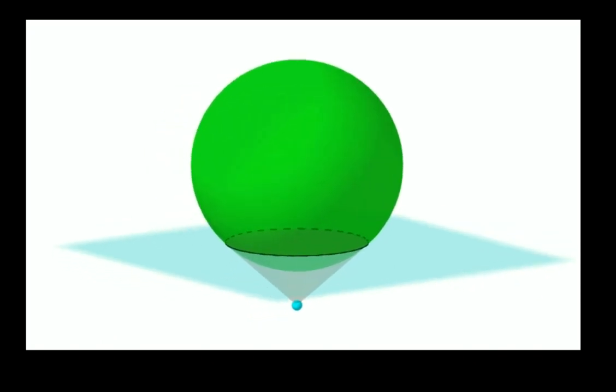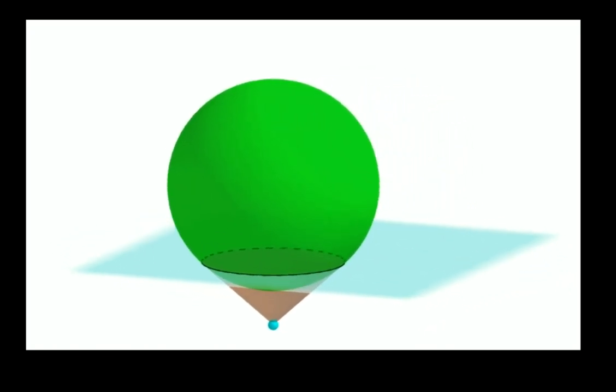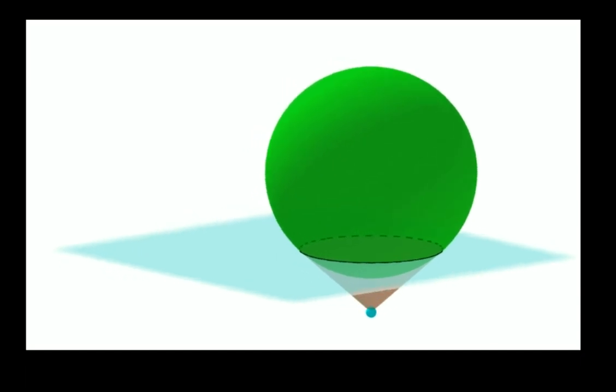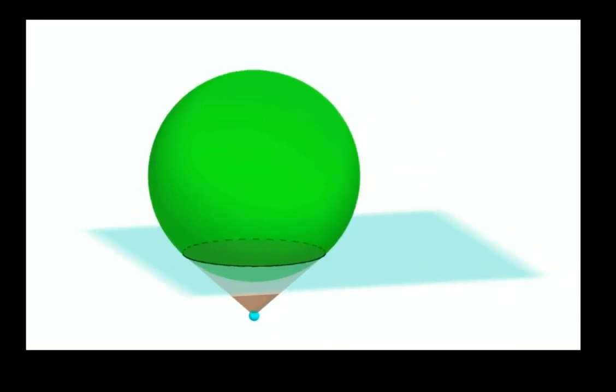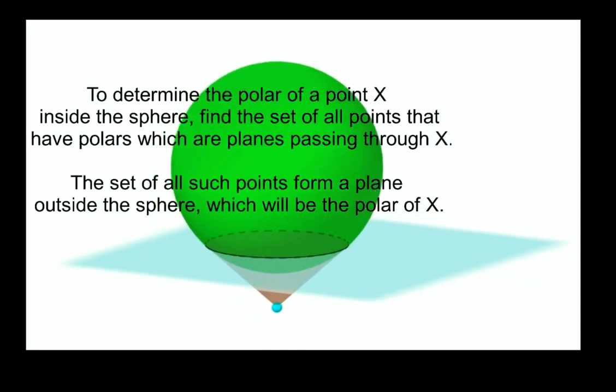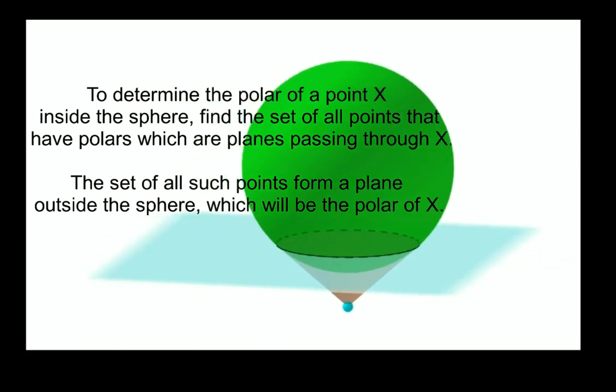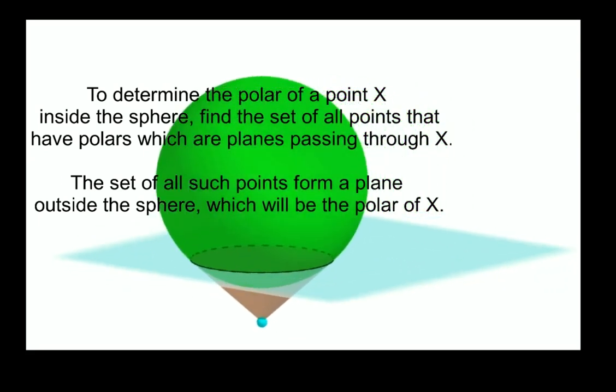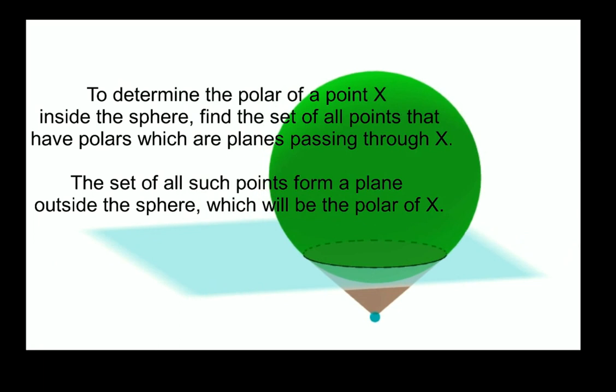Conversely, one could say that the pole of a plane which cuts through the sphere is going to be the point which is the place where all of the lines, tangential to the sphere, at the place where the plane cuts through it, meet. That would give the point at the apex of the cone. And, for a point inside the sphere, if we think of all the set of external points that have polars, which are planes passing through our inner point, or the set of all such points outside the sphere, form a plane outside the sphere. And that's actually going to be the polar of our point inside the sphere.